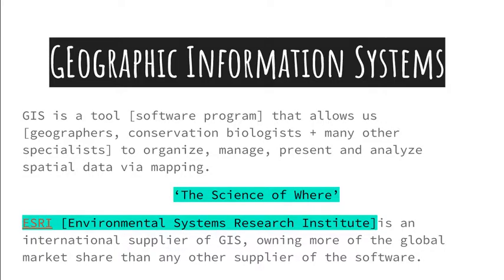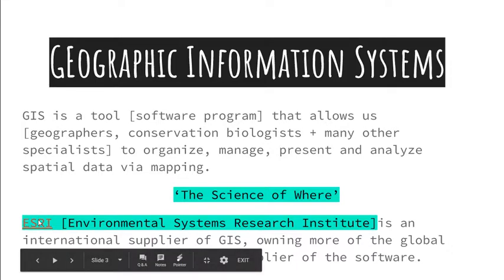Geographic Information Systems is a software program used as a tool allowing us as geographers, conservation biologists, along with many other specialists to organize, manage, present, and analyze spatial data using maps. It has been described as 'the science of where' by ESRI, which is worth mentioning because they're currently the largest supplier of GIS software in the world.